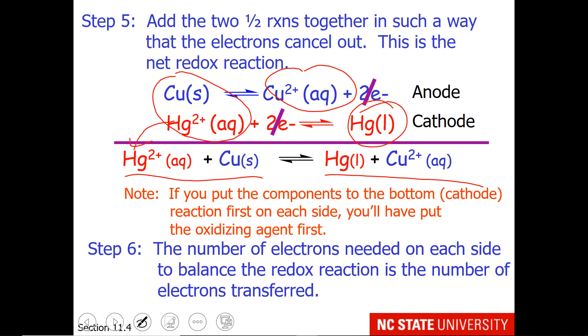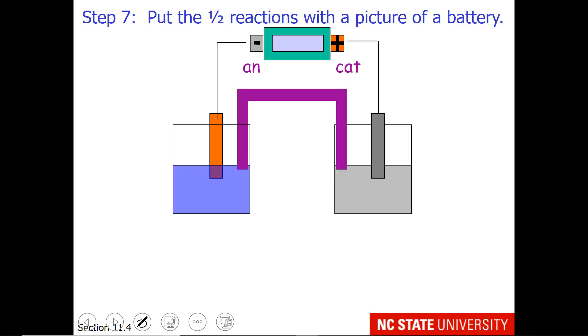You might be asked the moles of electrons for this reaction. This is the number of electrons that you use to balance your net redox reaction. You notice we add two moles of electrons on each side. So two moles of electrons are transferred. Now we just need to put this with our battery.